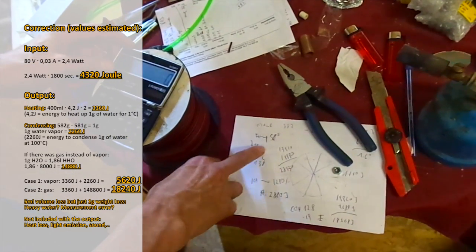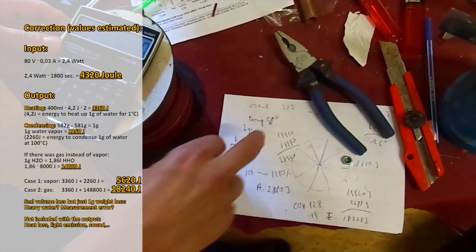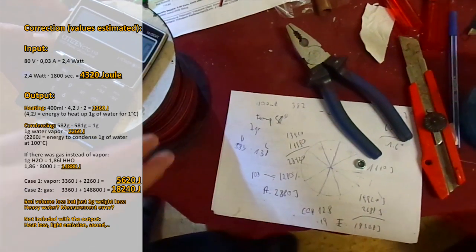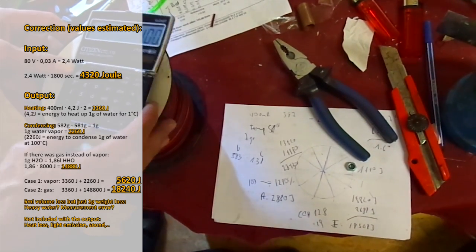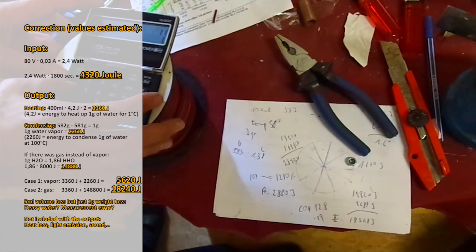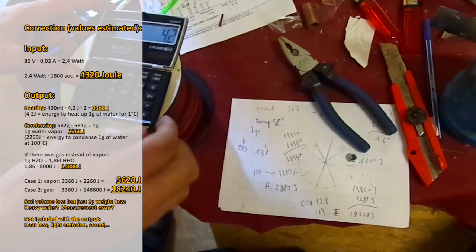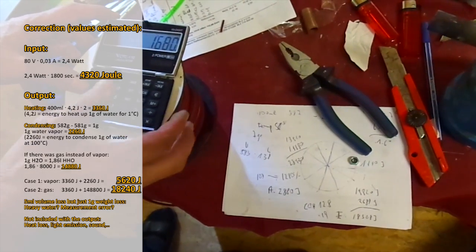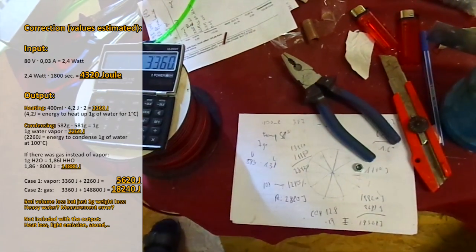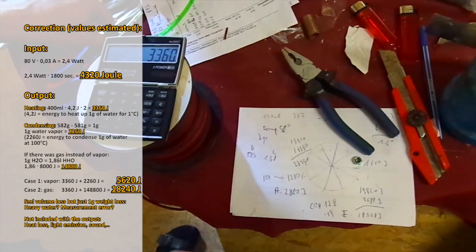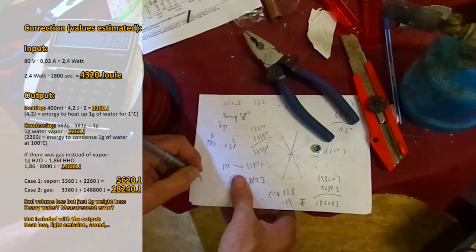Now for the output. We started with 58 degrees Celsius and ended up with 60 degrees. So the water was heated up for 2 degrees Celsius. So this is 400 milliliters by 4.2 J. Because we need 4.2 J to heat up 1 gram of water for 1 degree Celsius. 400 milliliters by 4.2 J by 2 degree Celsius equals 3,360 J. This is just the water temperature. It's all without light emission, sound, heat and light loss and everything.